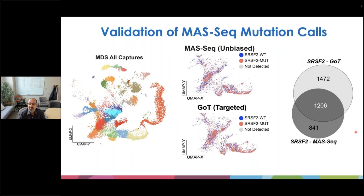An important requirement for us is that we can accurately measure single-cell genotypes from this assay. To validate, we performed a parallel targeted single-cell sequencing assay called GOT — genotyping of transcriptomes from Dan Landau's group — which matched observed genotype calls from MOS-Seq when looking at a single mutation in the gene SRSF2. The mutant cells are denoted in red and wild-type cells in blue with either GOT or MOS-Seq.